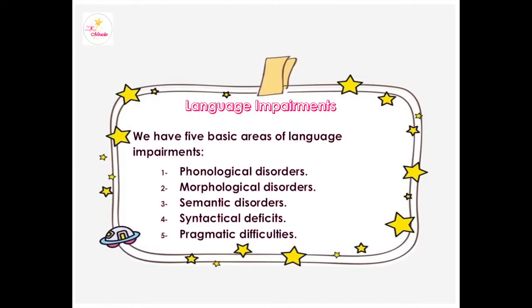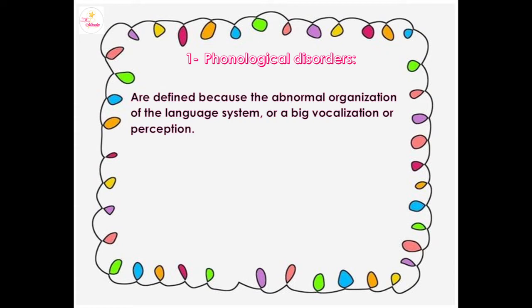There are five basic areas of language impairments: one, phonological disorders; two, morphological disorders; three, semantic disorders; four, syntactical deficits; and five, pragmatic difficulties. Phonological disorders are defined as the abnormal organization of the language system or atypical vocalization or perception.